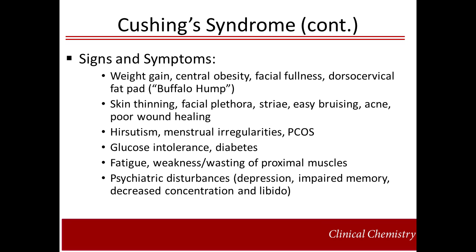Dermatological changes include thin skin, facial plethora, marked reddish-purple striae, easy bruising, acne, and poor wound healing. Hormonal imbalance causing hirsutism, menstrual irregularities, and polycystic ovarian syndrome. Irregularities in glucose metabolism, such as glucose intolerance and type 2 diabetes. Fatigue is a common symptom, and weakness and/or wasting of proximal muscles is a strong indicator of Cushing's. Finally, psychiatric disturbances are often seen, including depression, memory impairment, and decreases in concentration and libido.